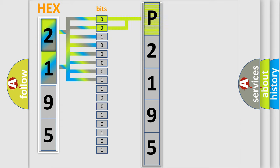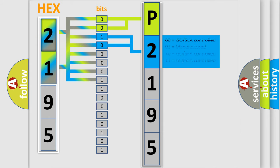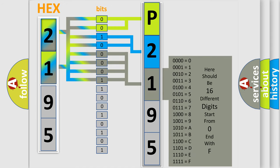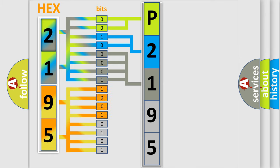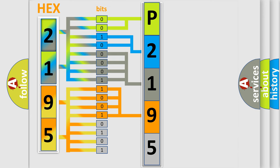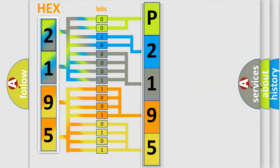By combining the first two bits, the basic character of the error code is expressed. The next two bits determine the second character. The last four bits of the first byte define the third character of the code. The second byte is composed of a combination of eight bits: the first four bits determine the fourth character, and the last four bits define the fifth character. A single byte conceals 256 possible combinations.